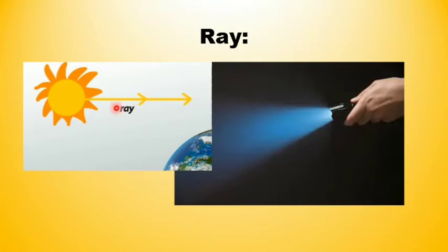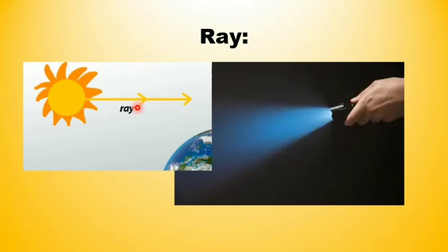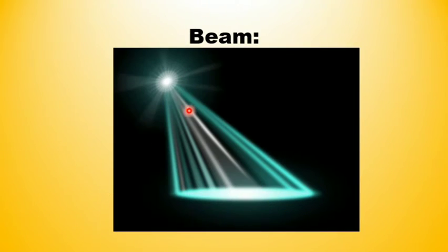Isko indicate karte hain, beta, ek straight line se aur us pe ek arrow banate hain. Arrow direction show karta hai, jis direction se light aa rahi hoti hai wo direction indicate karta hai. A collection of rays is called a beam of light. Jab bahut saari rays aapas mein mil jaati hain, to wo beam of light kehlaati hai.